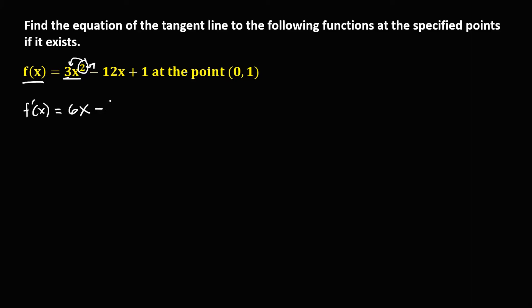Then minus — for the derivative of 12x, we just need to drop the x, so the derivative of 12x is 12. And the derivative of a constant is 0. Therefore, the derivative of this given function is 6x minus 12.